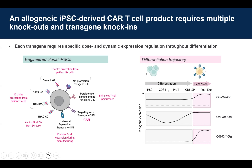Because they have specific function, they need to be regulated specifically throughout differentiation. On the right side you see some modes of action. Certain transgenes can be expressed throughout differentiation as long as they're expressed at the end stage. Others benefit from transient silencing, and a third kind requires very stringent repression throughout differentiation, only expressed at the end-stage expanded CAR-T cells to allow successful production.